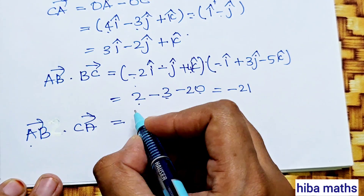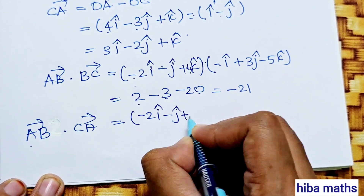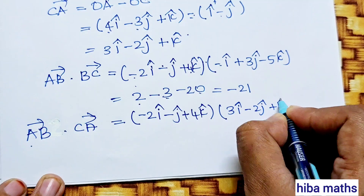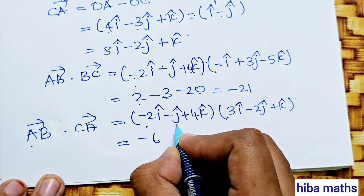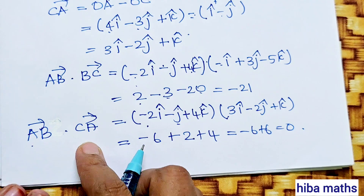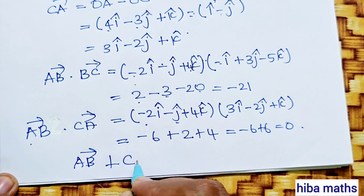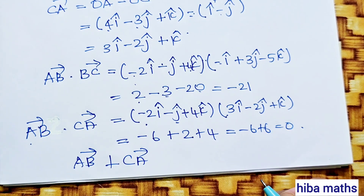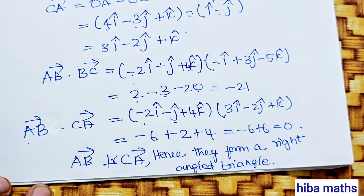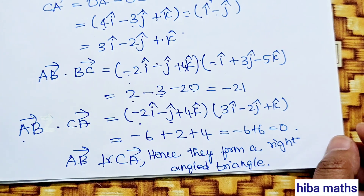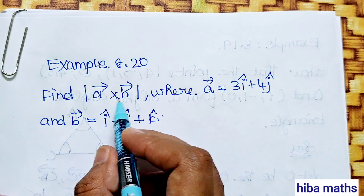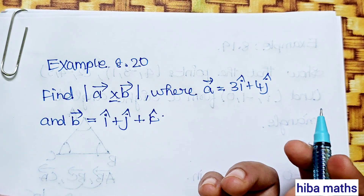Now AB · CA = (-2i - j + 4k)·(3i - 2j + k) = (-2)(3) + (-1)(-2) + (4)(1) = -6 + 2 + 4 = 0. Since the dot product is 0, AB vector is perpendicular to CA vector. Therefore the given points form a right-angled triangle.